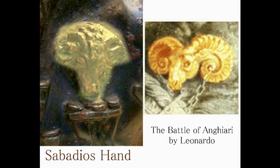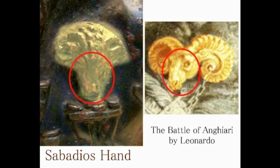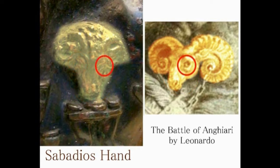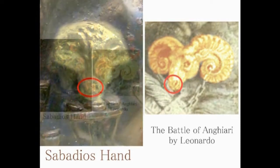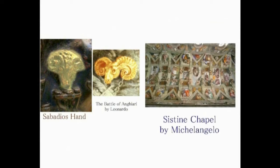大きく拡大してみました。同じ動物をレオナルドが、アンギャリの戦いの絵の中に描いています。この赤い丸の部分です。大きな角、巻いた角が表現されています。この両者は同じと判断しました。これは、何なのでしょうか。一見すると羊のようにも見えますが、ヤギということになりますね。あるいは、この地球には存在しない動物かもしれません。ともかくも、サバジオスの手のひらに描かれた動物と、アンギャリの戦いの中に描かれた動物が同じであるということです。